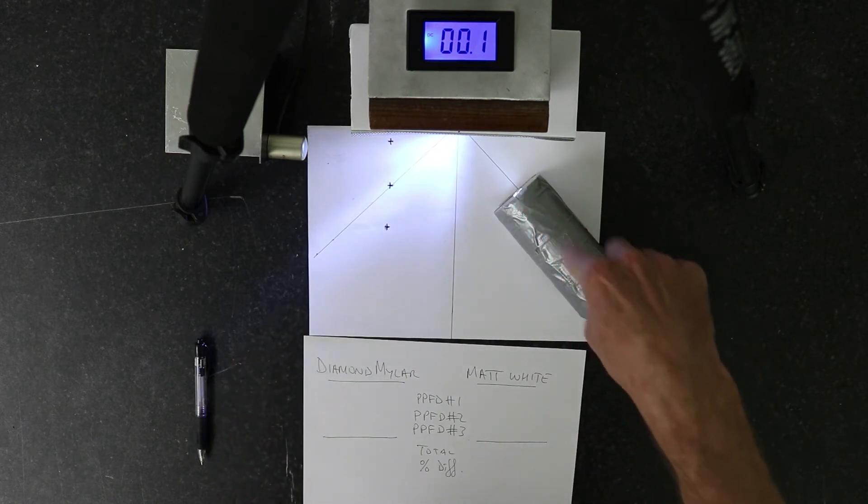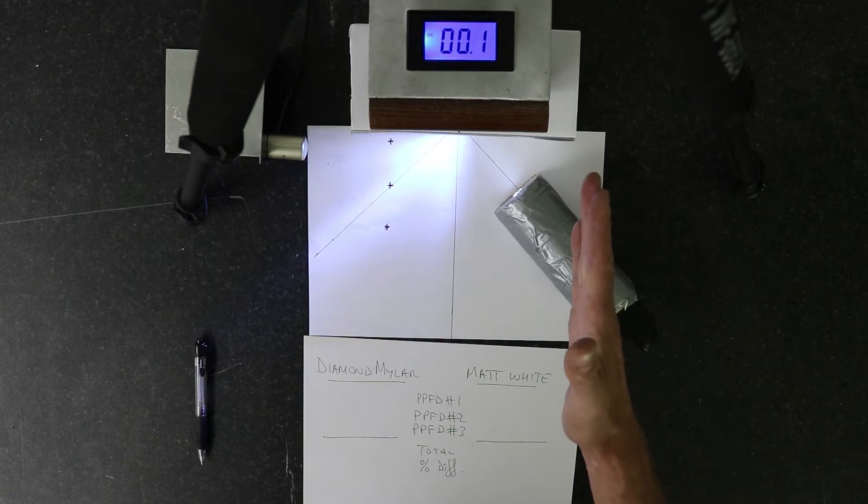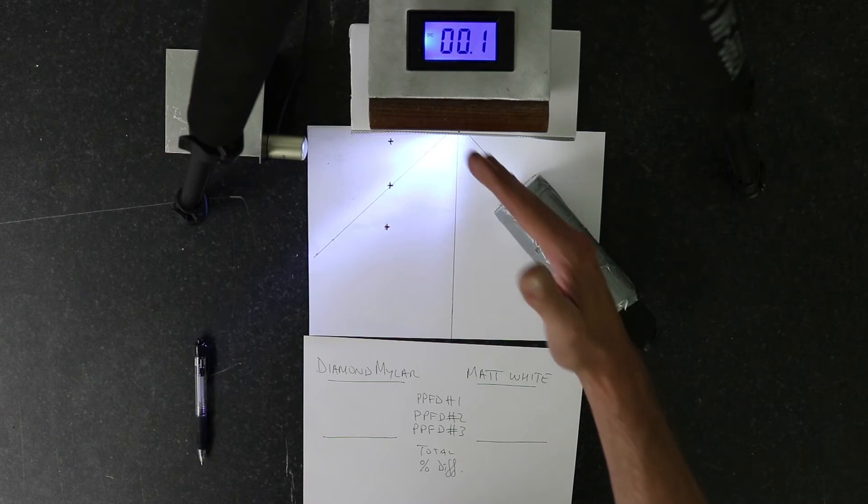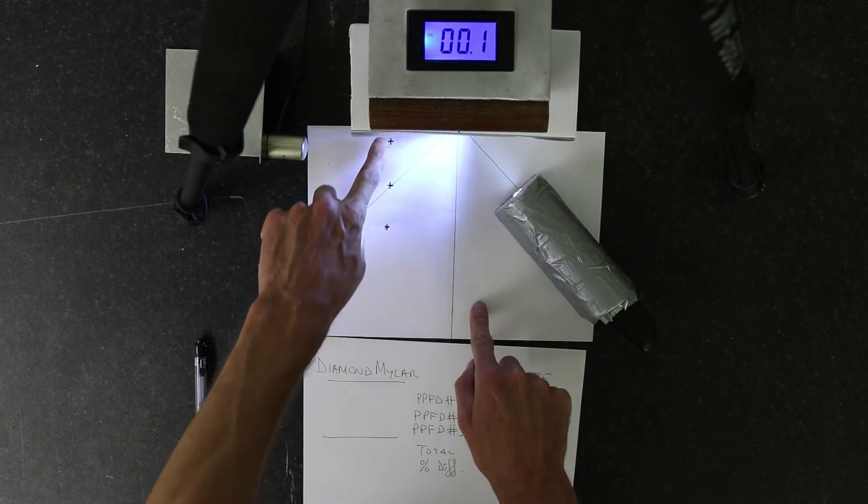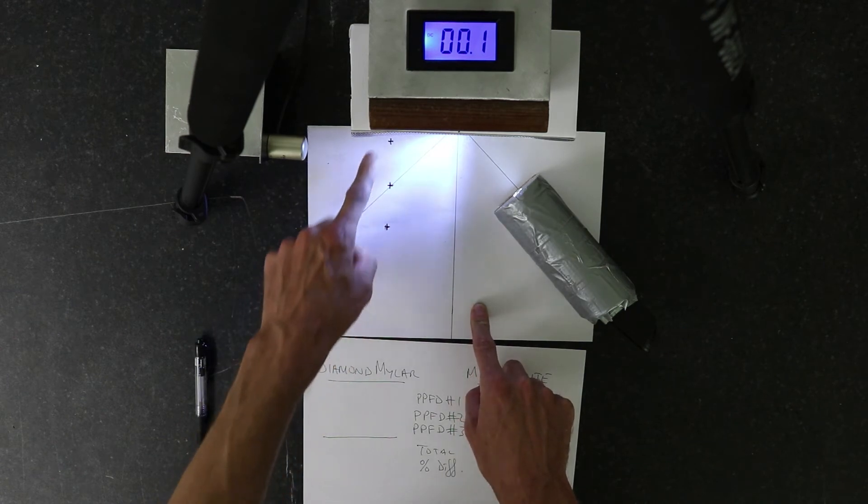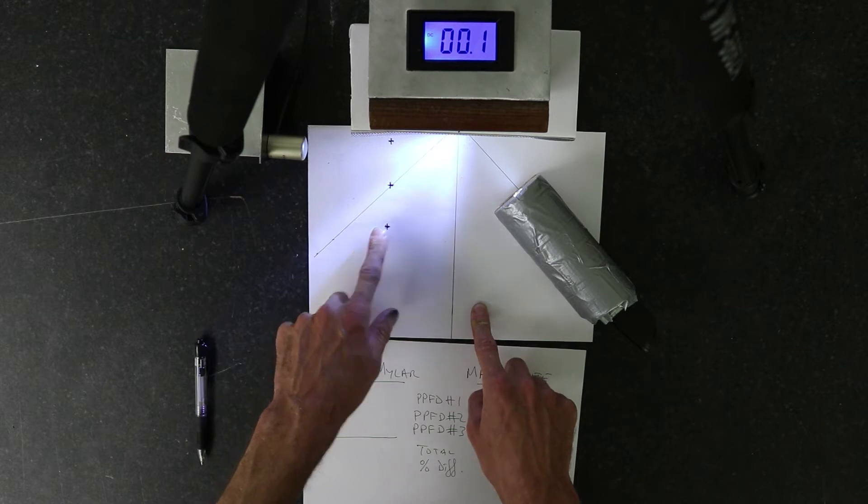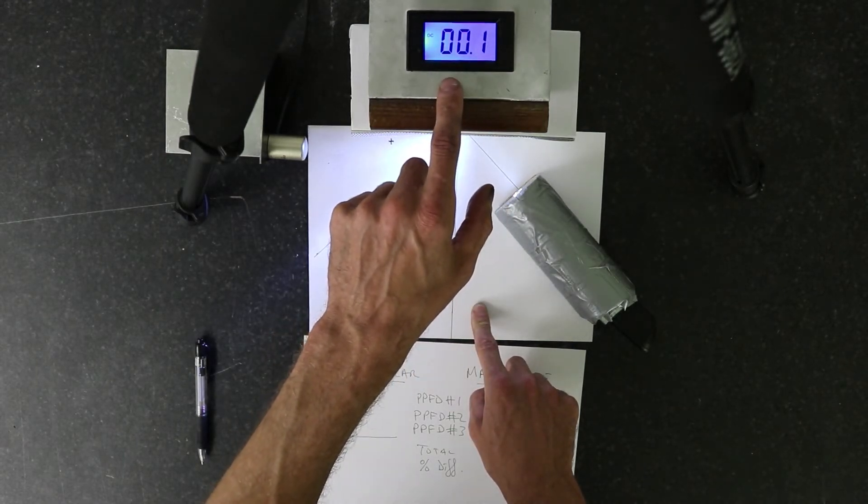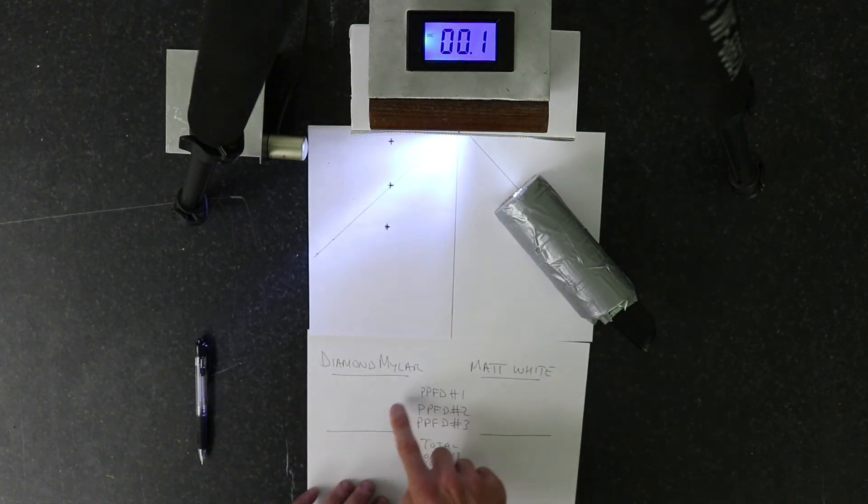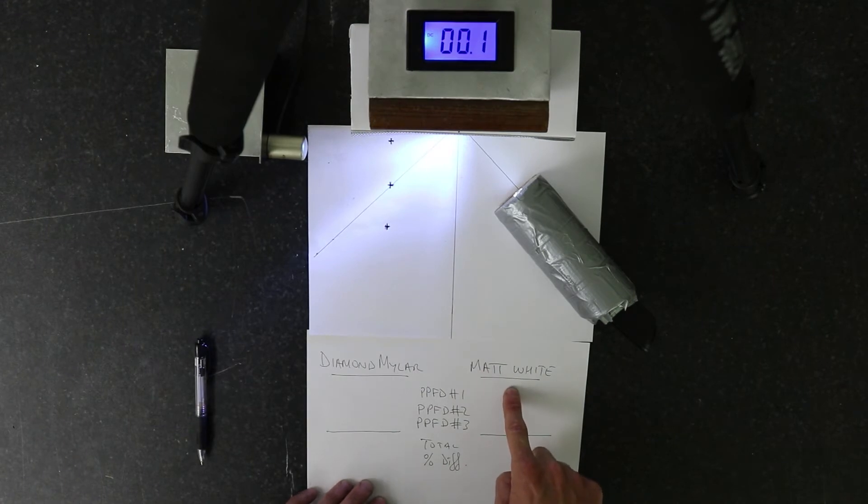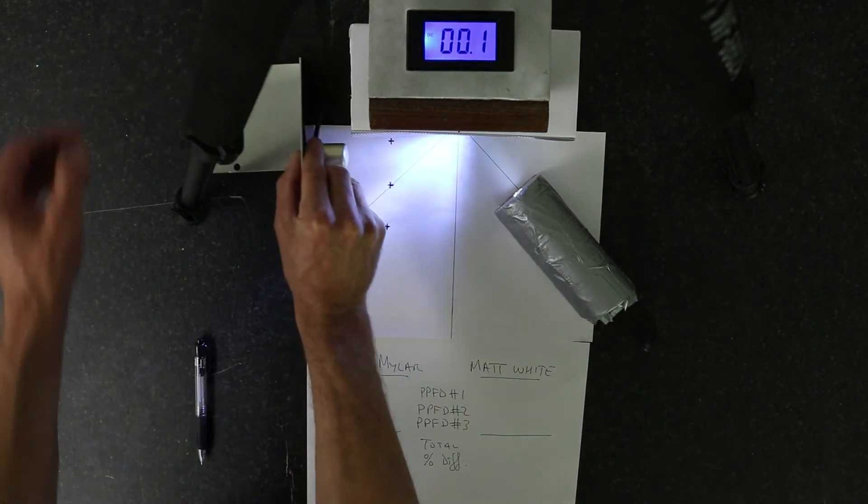The light source is representing, it could be your LED panel or your HPS system, and this is a beam, a light direction beam coming down hitting off the side wall of the tent and being reflected down onto your grow. We're going to take three power measurements for PPFD at these three points. You'll see the readout here. This is in tens of power. We're going to take the three measurements, one for the diamond mylar, one for the matte white, and compare the totals.